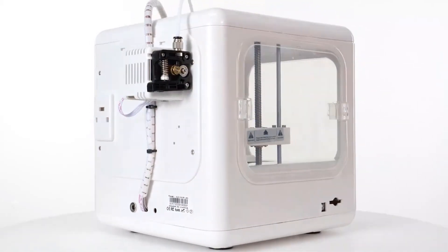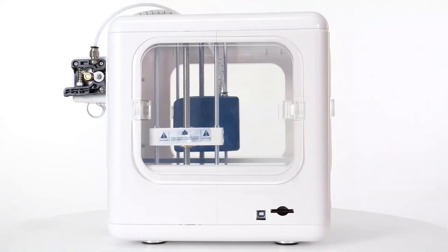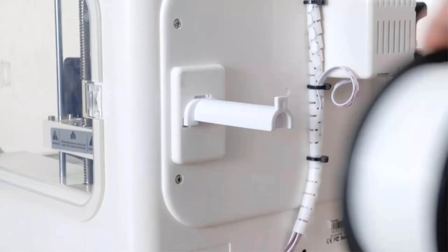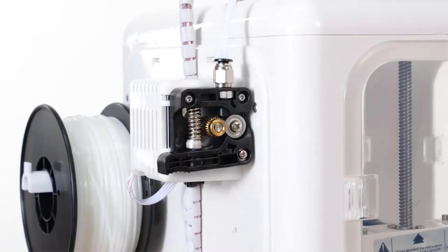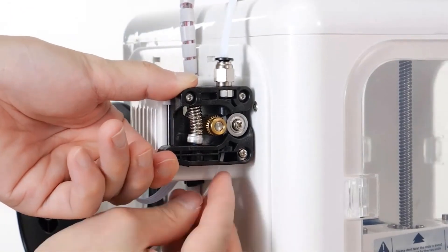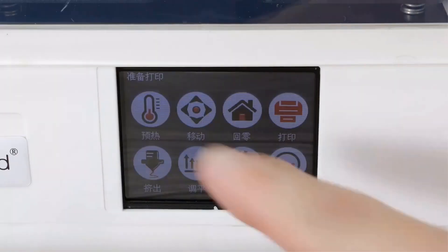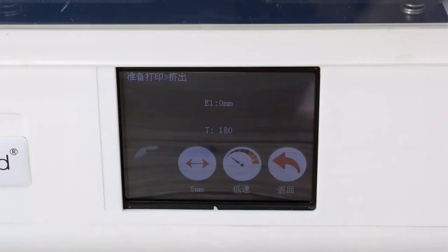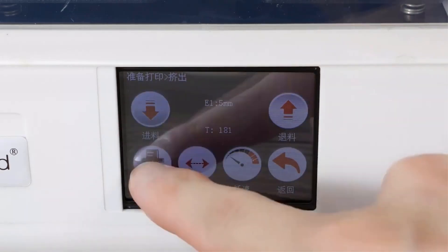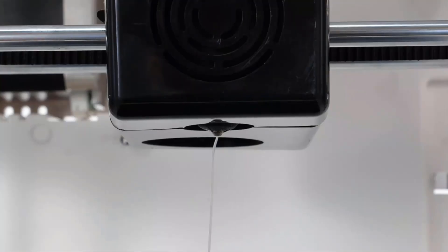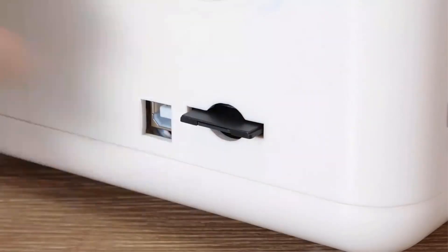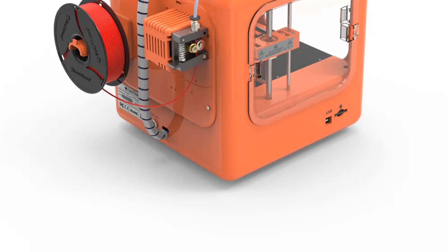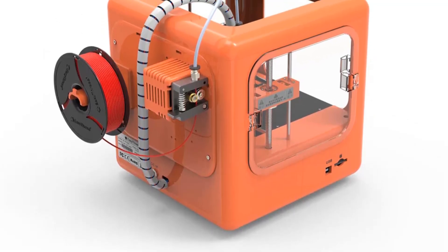The DORA printer comes in vibrant orange and white colors and features a building size of 120 x 120 x 120 mm. With a single 0.4 mm nozzle, the printer supports PLA filament with a diameter of 1.75 mm and offers printing accuracy ranging from 0.05 mm to 0.2 mm. The machine operates with a print speed of 10 to 100 mm per second and is compatible with EasyWare and Cura Slice software.